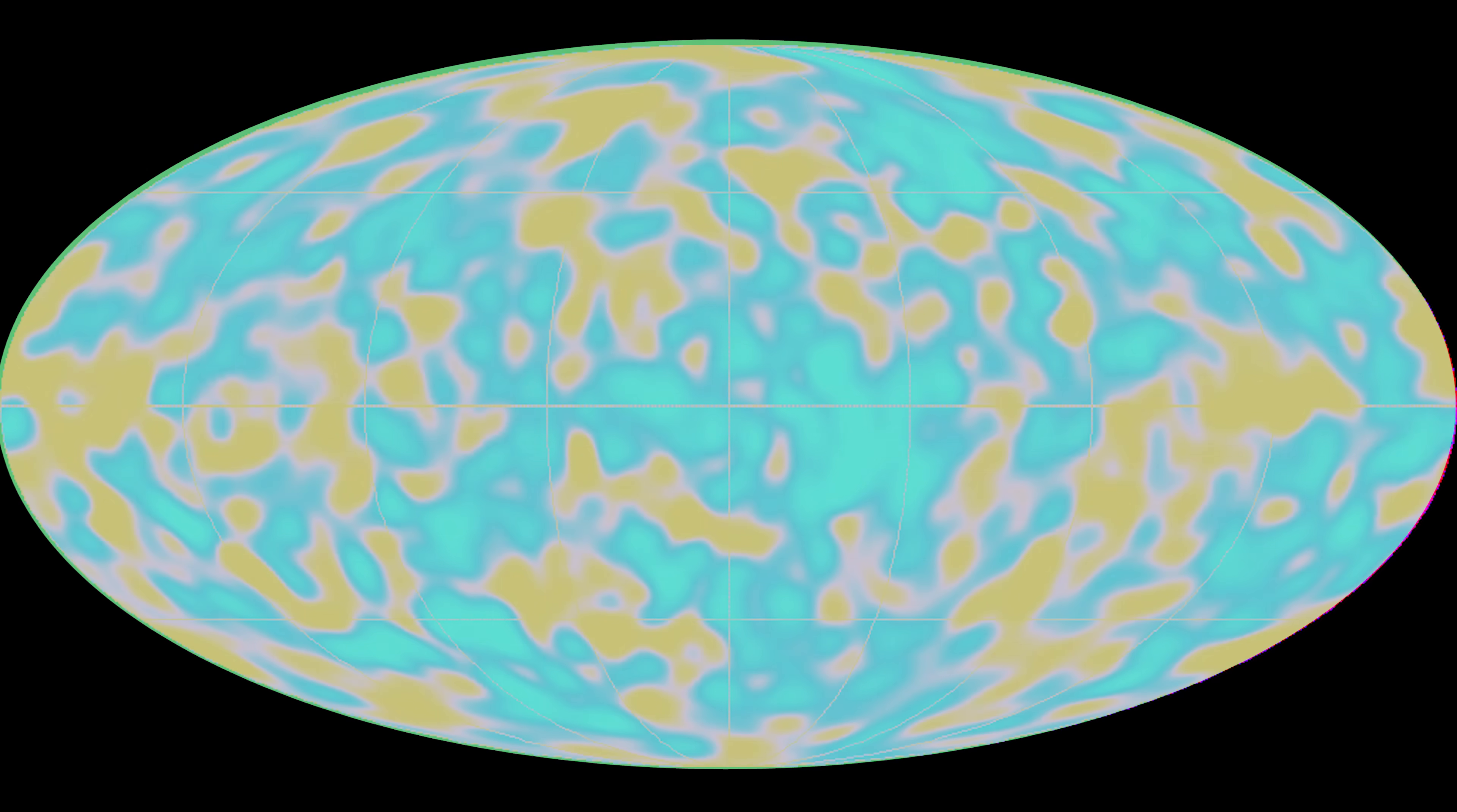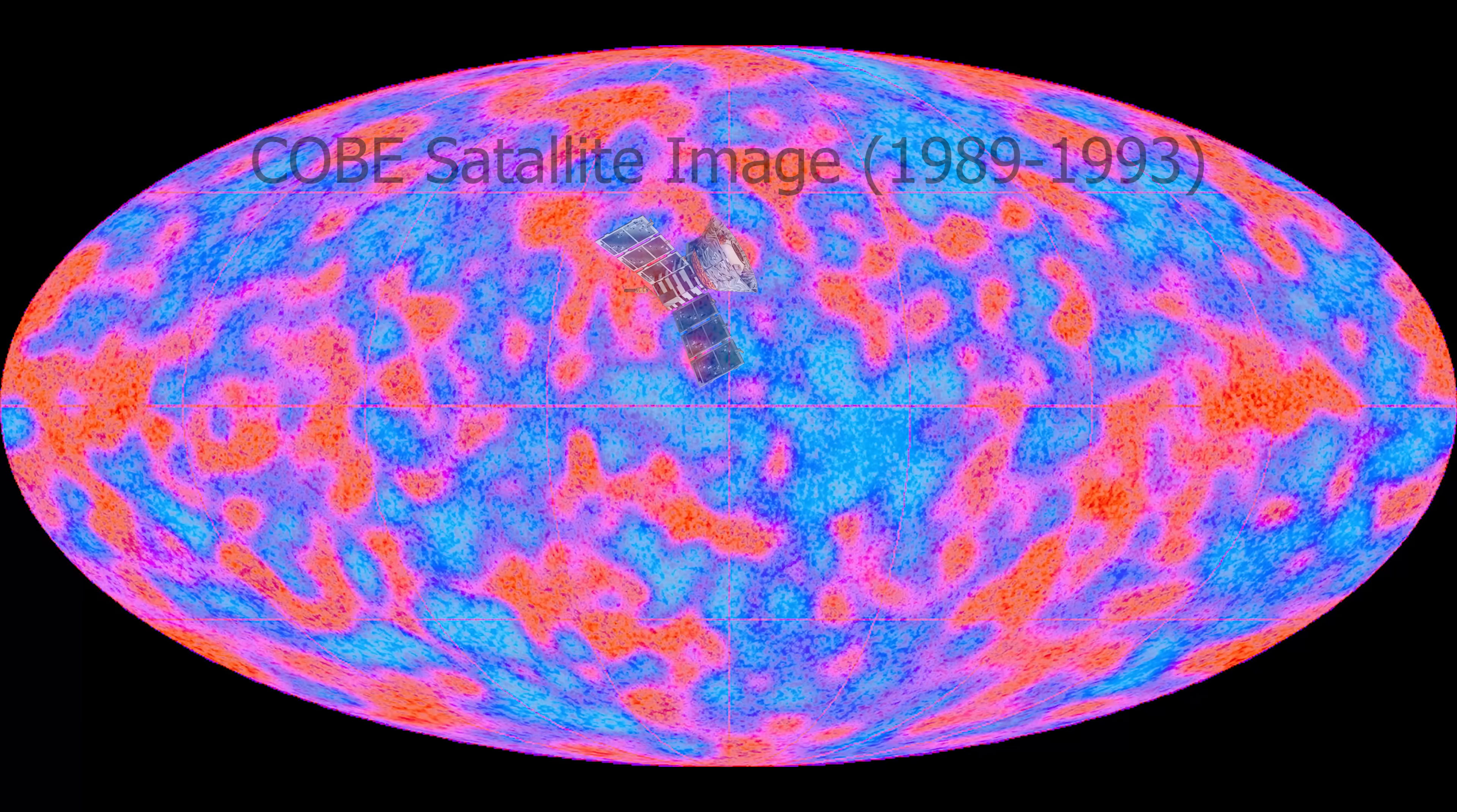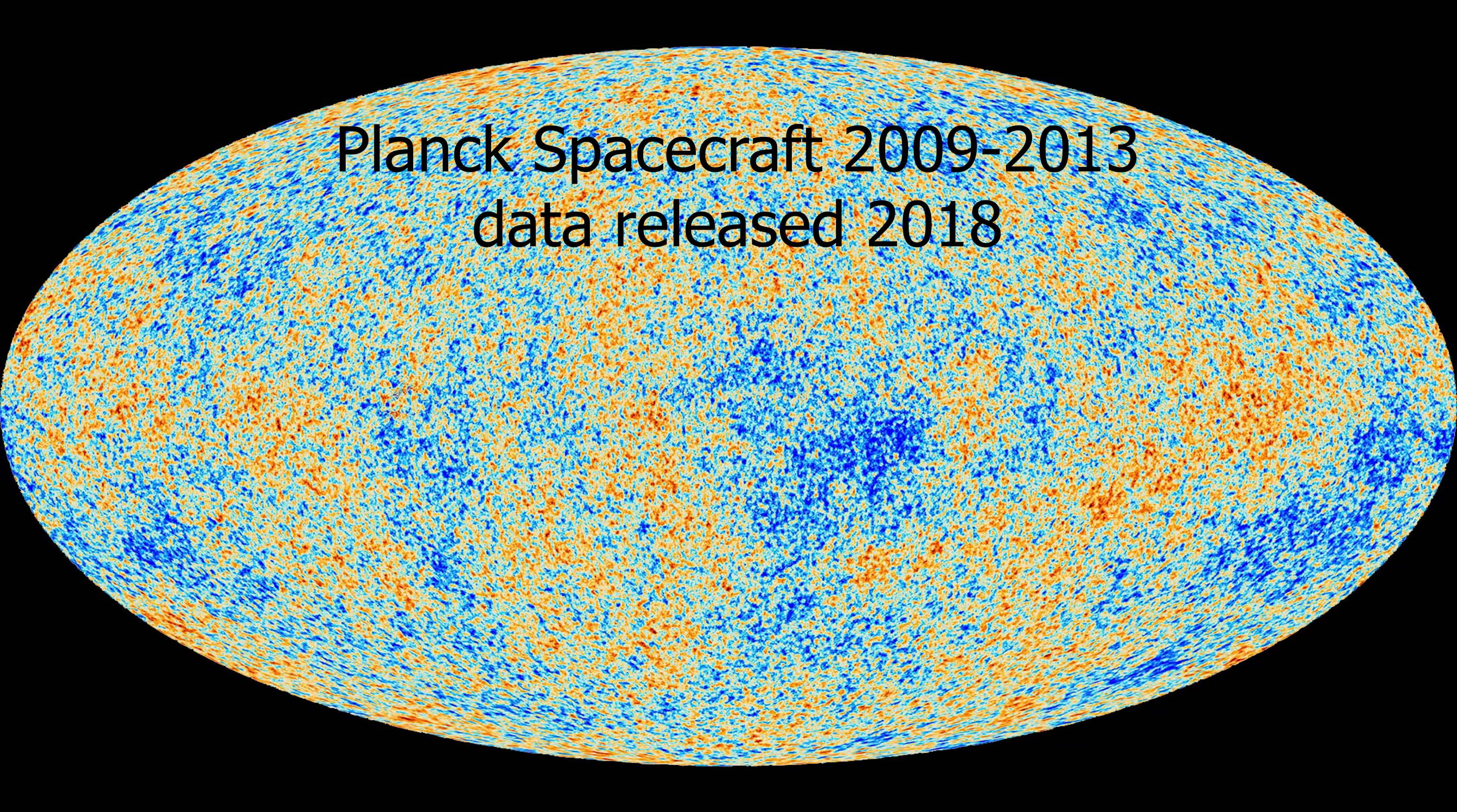Now later on when they got better instruments, they found out that it wasn't quite isotropic. Meaning that there were slight fluctuations in it and it looked more like this. But the actual differences in the peaks and valleys on this map is still only one part in a hundred thousand. So it's extremely uniform even though there are some slight fluctuations.